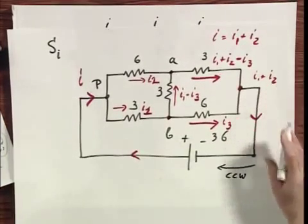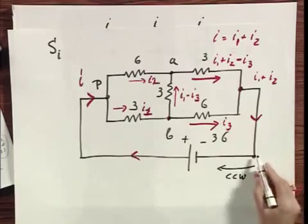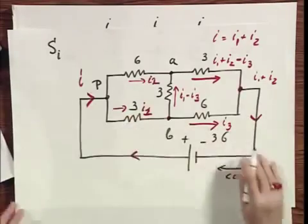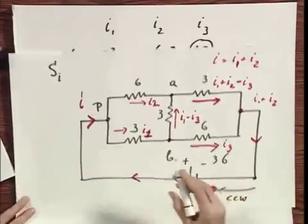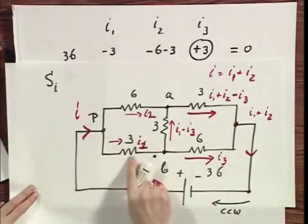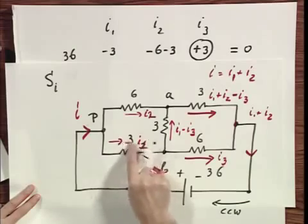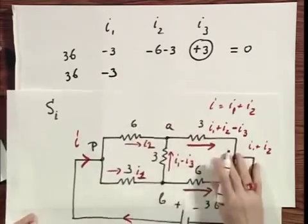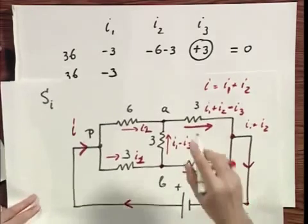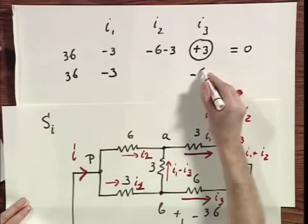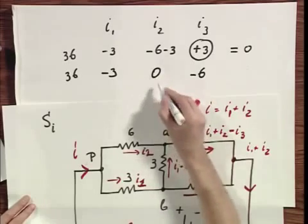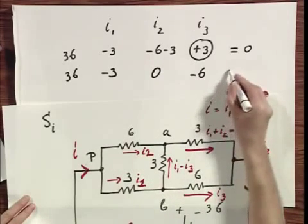What now is my second loop going to be? Well, take your pick. I have decided to take the lower one. I could have picked another one, but I'm going to take the lower one. You ready for the lower one? 36. I go through here, I go down, 3 I1, minus 3. I come here, I go down in potential, 6 I3, minus 6. And there's a zero here. Ha! There is no I2. And that equals zero.